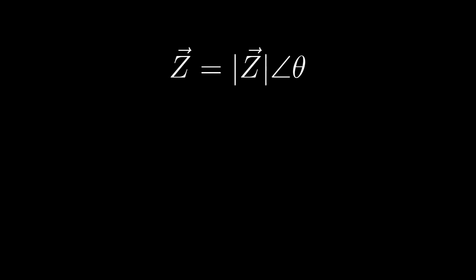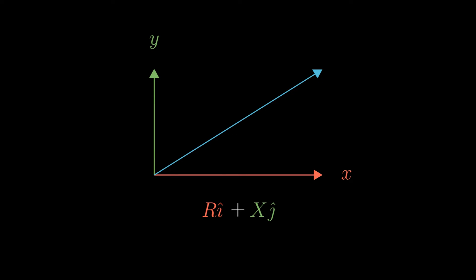Now, unlike voltages and current phasors, we typically don't write impedance as a magnitude and an angle. Instead, it's broken up into its components. The horizontal I-hat axis is the resistance, and the vertical J-hat axis is the reactance. But instead of writing these in the XY plane, we're going to imagine them in the complex plane. The X-axis is the real component, the Y-axis is the imaginary component.